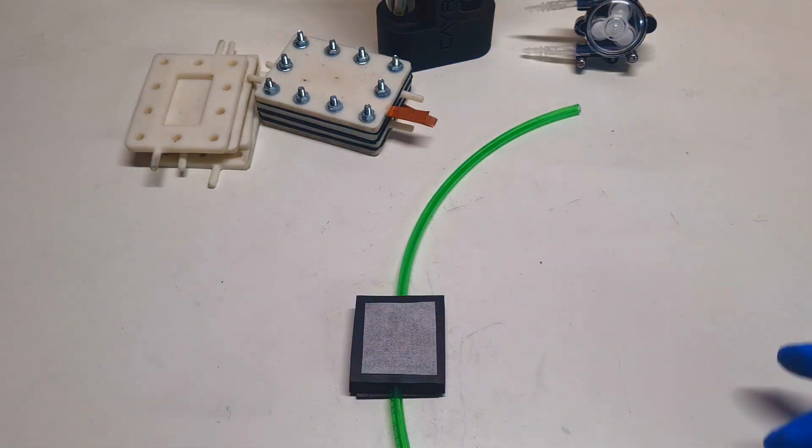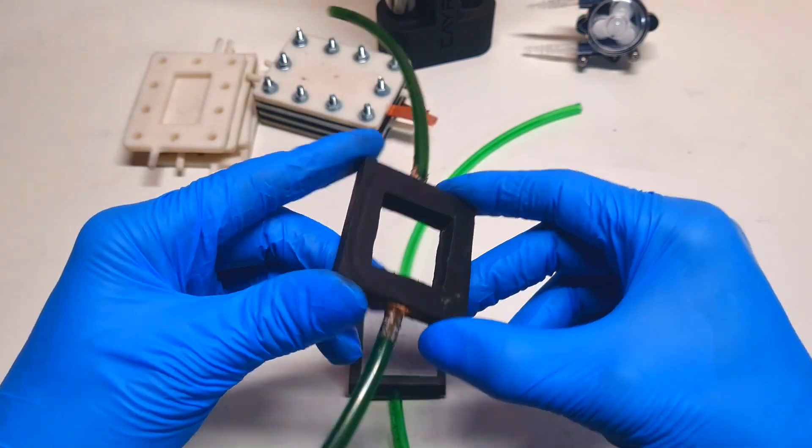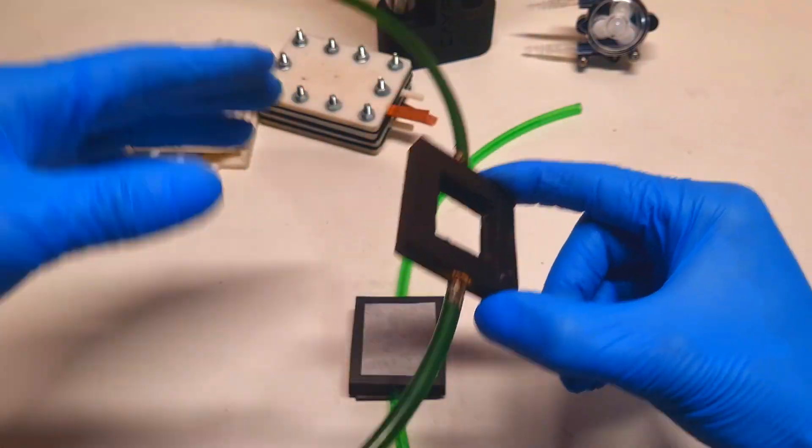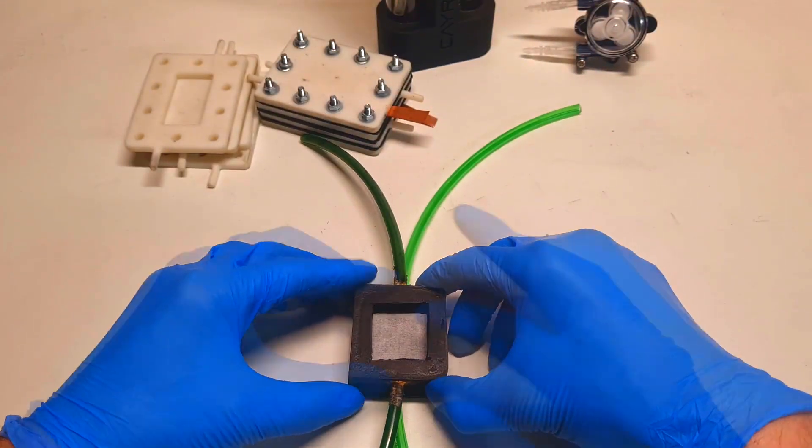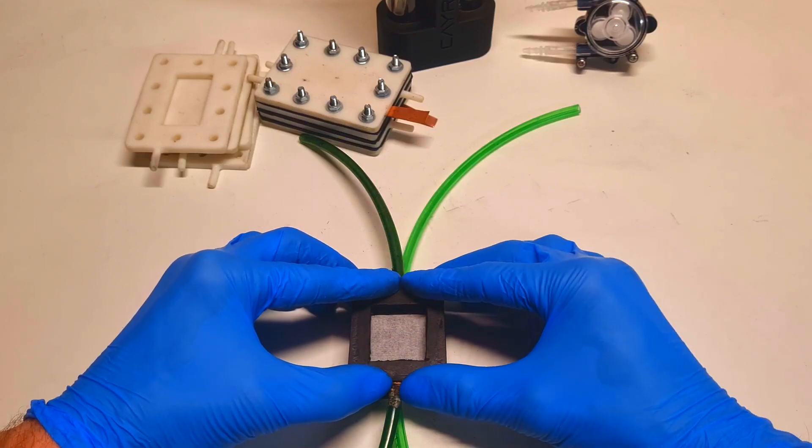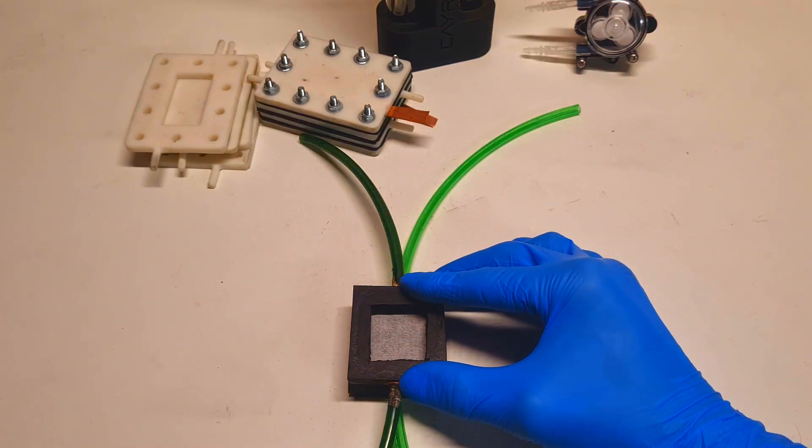On the top you will put the second cell housing with the pipes, of course. And again this empty space you will fill with conductive felt.